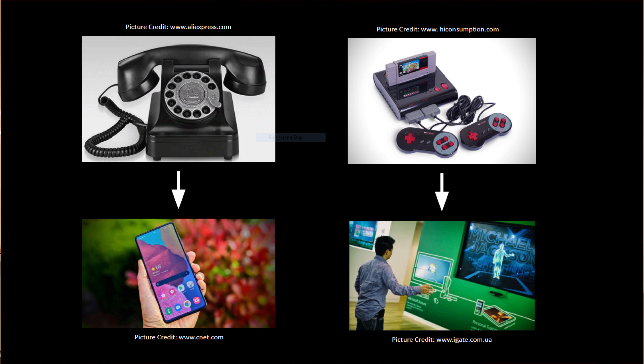Gaming consoles started with buttons and joysticks, which evolved into gesture control with the Xbox Kinect and Nintendo Wii. Home automation brought voice control in the form of Siri and Alexa. And Pokémon Go and Google Translate have brought augmented reality to life. User interfaces continue to evolve at a rapid pace in order to meet the needs and expectations of the user.